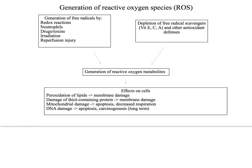So let's talk about generation of reactive oxygen species. These are also called free radicals, which are extremely unstable, highly reactive chemical species, with a single unpaired electron in an outer orbital. In cells, they attack and degrade nucleic acids, proteins, lipids, and carbohydrates. Some examples of free radicals include hydroxyl, hydrogen, or superoxide.